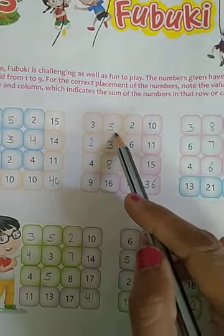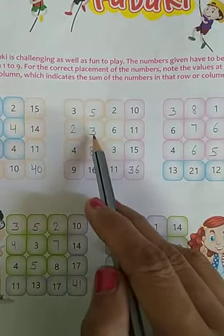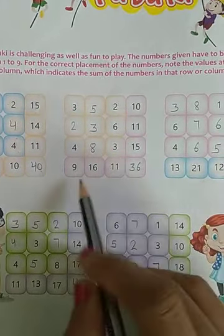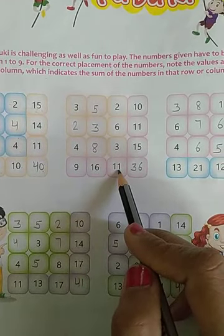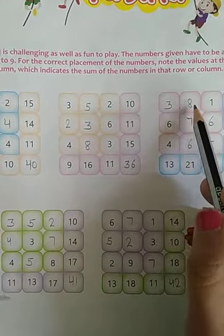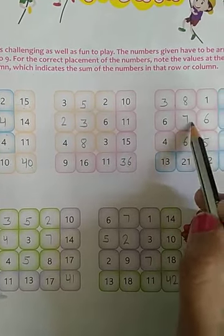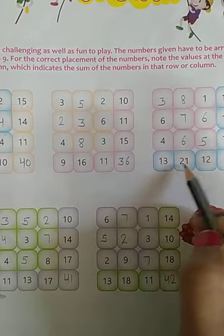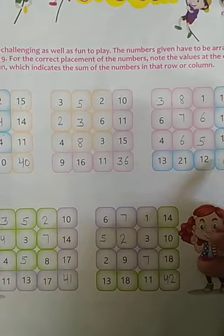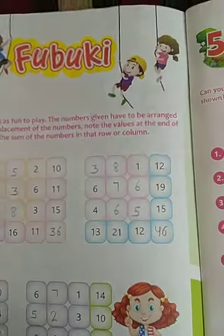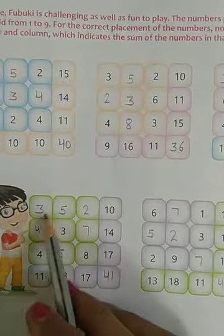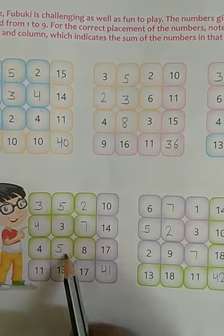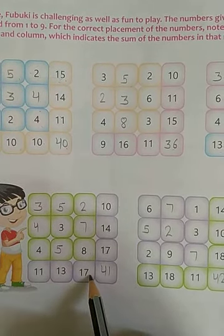Next में: blank छोड़ रखा था। 2+3+6=11, 4+8+3=15, 9+16+11=36। Next: 3+8+1=12, 6+7+6=19, 4+6+5=15, and 13+21+12=46। Next: 3+5+2=10, 4+3+7=14, 4+5+8=17, 11+13+17=41।